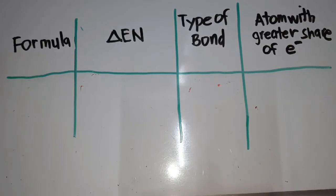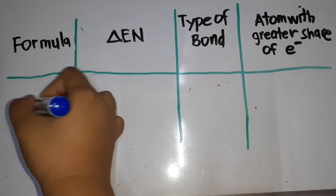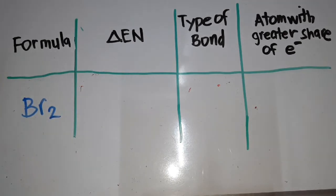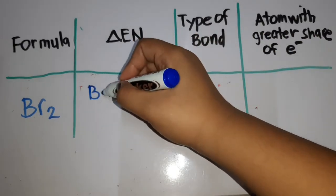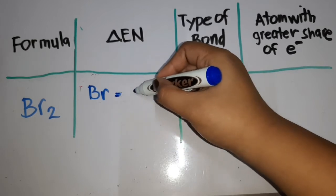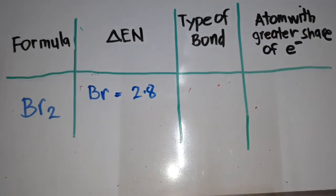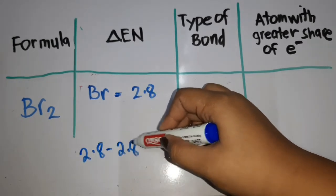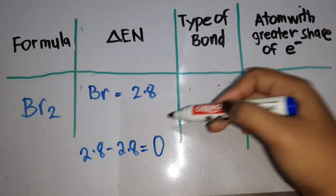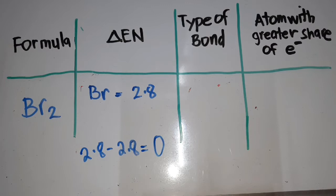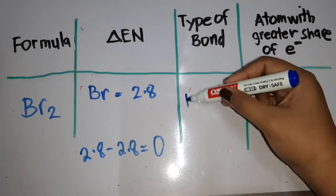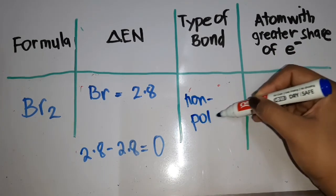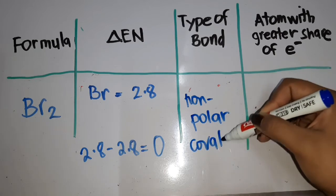The atom with the greater share of electrons is oxygen. Next, we have Br₂ — two bromine atoms bonded together. The electronegativity of Br is 2.8. Since we have two Br: 2.8 minus 2.8, the answer is 0. Since 0 is less than 0.5, the type of bond is non-polar covalent bond.